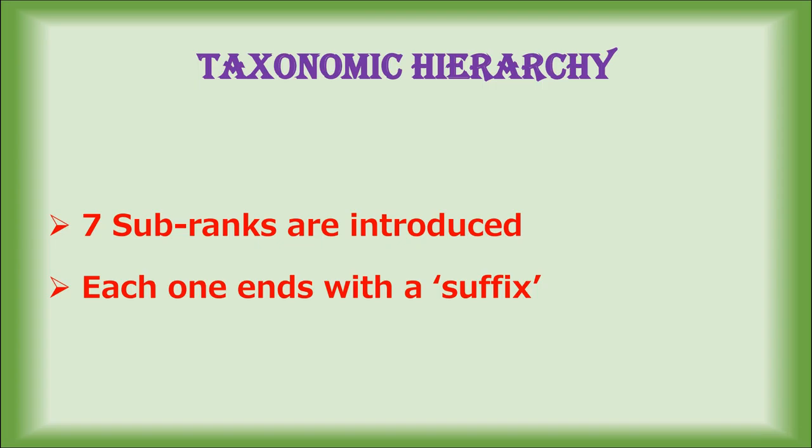Taxonomic hierarchy was introduced by Carolus Linnaeus and it is the arrangement of various taxonomic groups at various levels in descending order. It starts from the kingdom and ends in species. Kingdom is the highest level or rank of classification whereas species is the lowest level. At the lowest level they have a high level of similarities among the organisms. There are seven sub-ranks in the taxonomic hierarchy: kingdom, division, class, order, family, genus and species. Each one will end with a suffix.